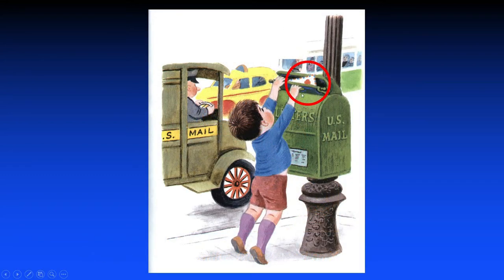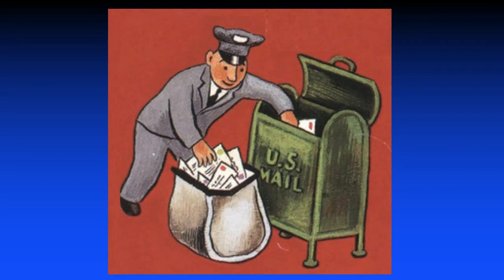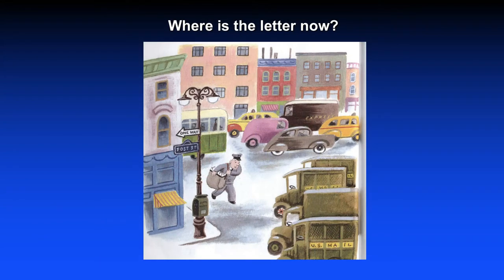Then we see the boy putting the envelope in the mailbox. By this point I've pointed out the special nature of the envelope and shown the child my sample. When the postman reaches in and puts everything in his bag, I would ask: 'Where is the letter now?' To answer that, you need story continuity — you've got to realize the boy wrote it, put it in the mailbox, the postman reached in, and put it in his bag. So it must be in the postman's bag. But without central coherence from page to page, you can't answer that question — you have no way of knowing.